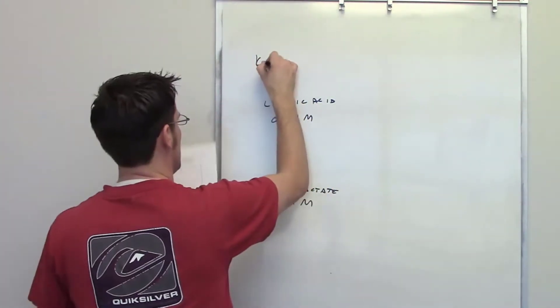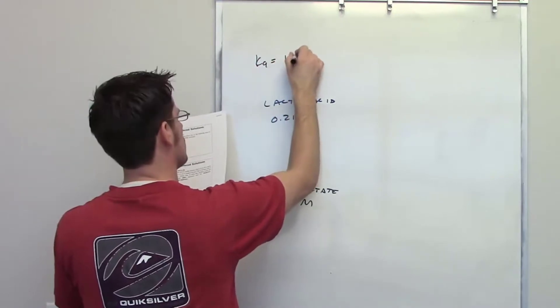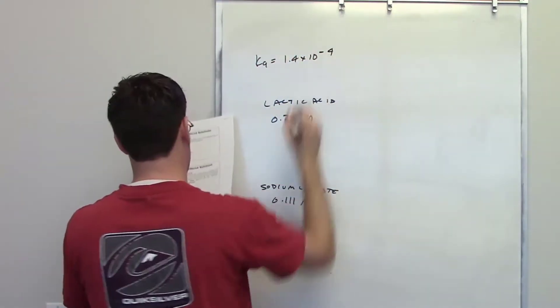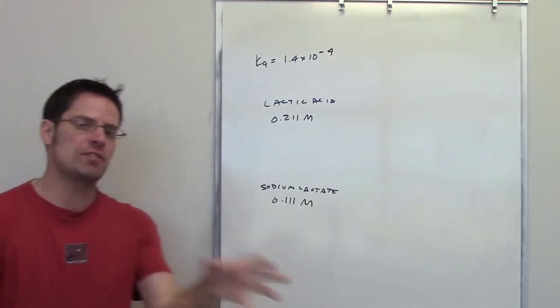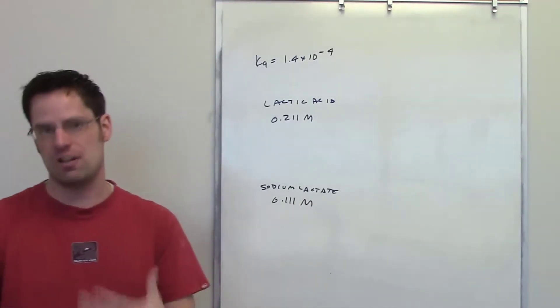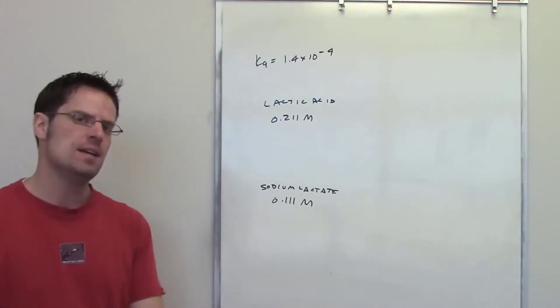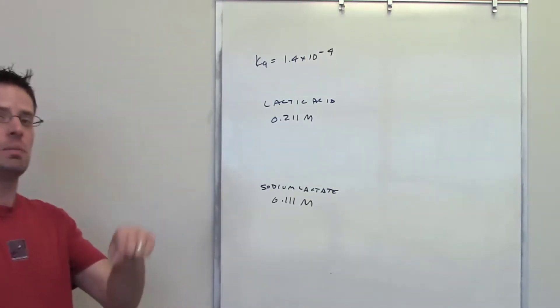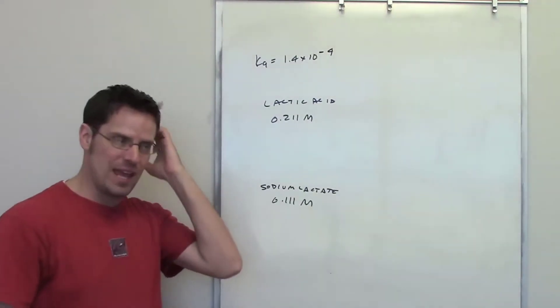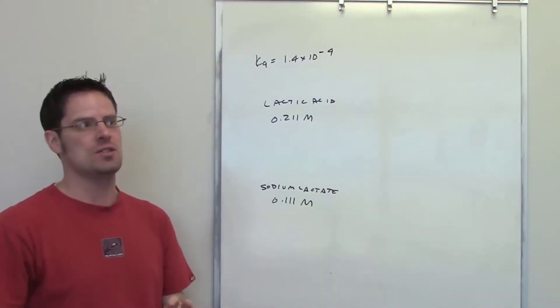It then gives us the Ka of lactic acid as being 1.4 times 10 to the negative 4th. It asks us to solve this problem using two different approaches. The first is the common ion effect approach, which I've shown you earlier. The second is the Henderson-Hasselbalch equation. I'm going to show you how to do both. You'll discover at the end that the Henderson-Hasselbalch approach is much, much easier.